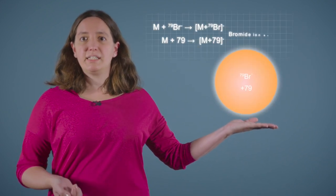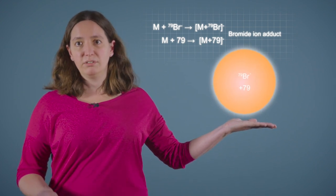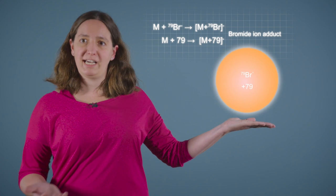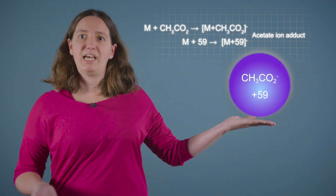Bromide ions make singly charged adduct ions 79 or 81 mass units heavier than the analyte molecules depending on which isotope is forming the adduct ion, and acetate ions make singly charged adduct ions 59 mass units heavier than the analyte molecules.